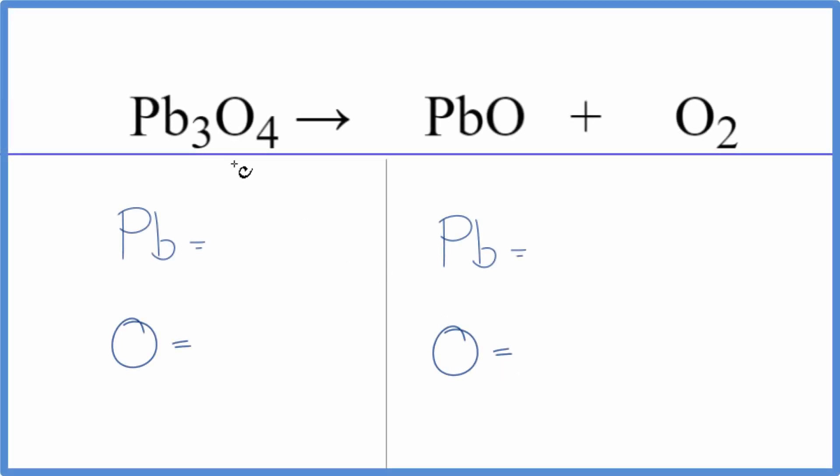In this video, we'll balance the equation for Pb3O4 decomposing, breaking down into PbO plus O2. This is called lead 2,3 oxide. And then you get this lead 2 oxide oxygen gas.